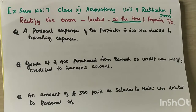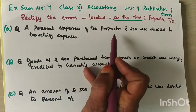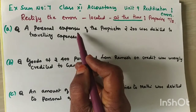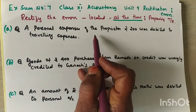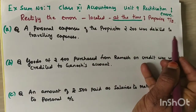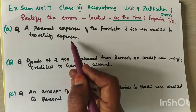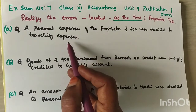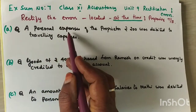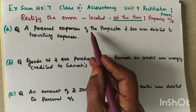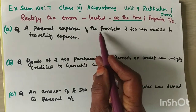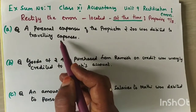First one: personal expenses of the proprietor, rupees 200, was debited to travelling expenses. Personal expenses of the proprietor — that is drawings. So the correct entry is: drawings account debit to cash. The wrong entry recorded was: travelling expenses account debit to cash.